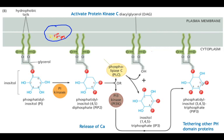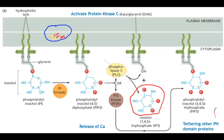If cleavage does not happen and PIP2 is converted into PIP3 instead, this membrane-bound PIP3 is responsible for tethering additional PH domain proteins to the cell membrane. In summary: the inositol element in the phospholipid membrane is further phosphorylated upon RAS exposure, and RAS activation results in additional phosphorylation with two options — cleavage or remaining membrane-bound.